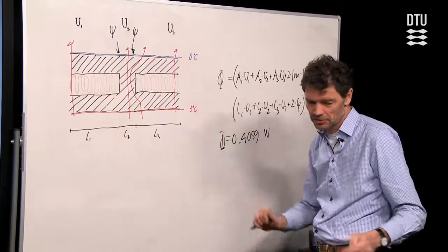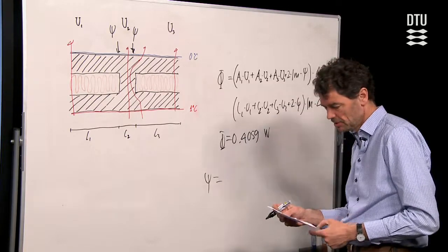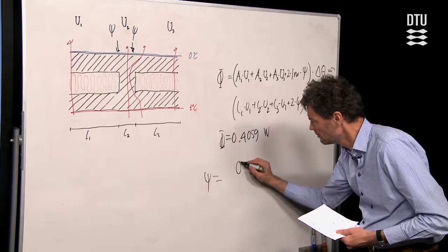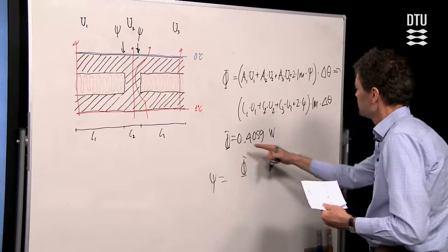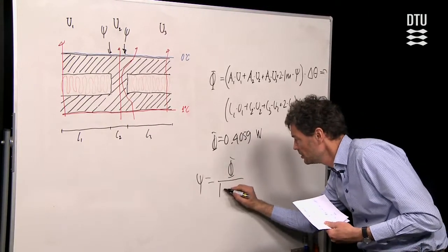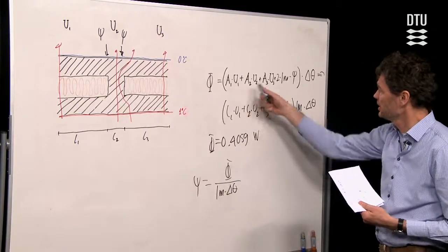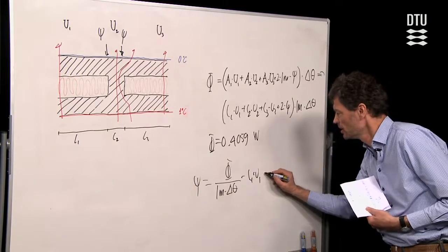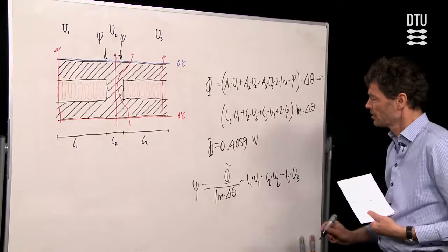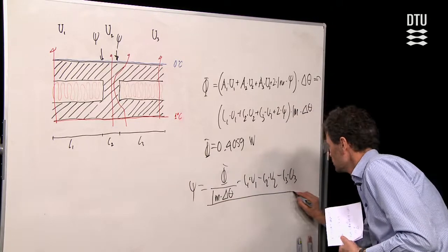So that we should then use to isolate Psi. When I do that, I have to be careful here. Then I have Psi in a calculation, which tells me that we should take phi equal to the heat flow that was calculated by the program. But if I take phi, I should divide by 1 meter, and I should divide by delta theta, the temperature difference. And then I can subtract all the things I have. I can subtract L1 times U1 minus L2 and U2 minus L3 times U3. That was almost Psi because I had two of them. So I have to divide in the end the result by 2.